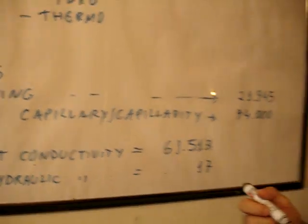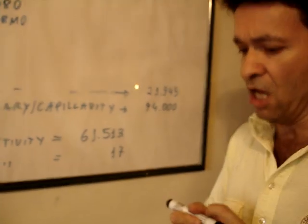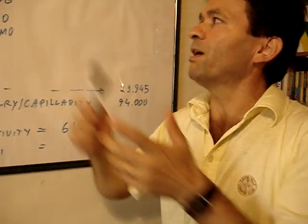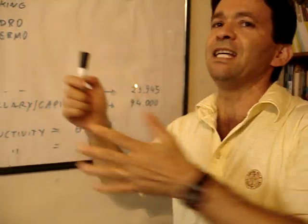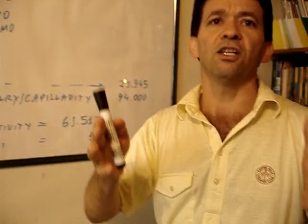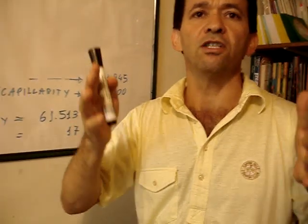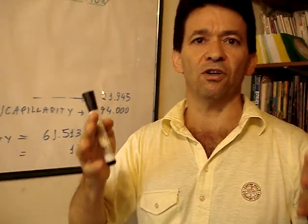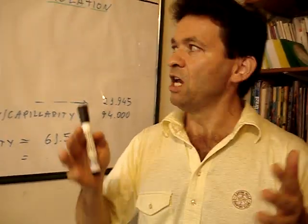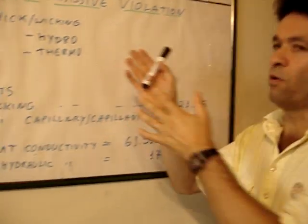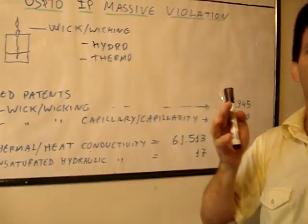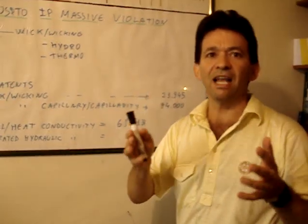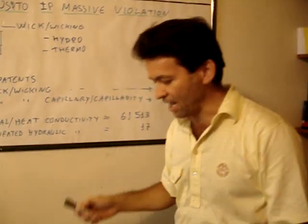Hydrology has been neglected. Everybody knows what a wick is, but a wick is a terminology — it is the hydrology of oil lamps or candles. It is not supposed to be used in patenting unless for oil and candles.